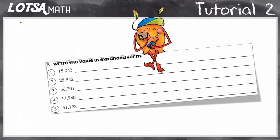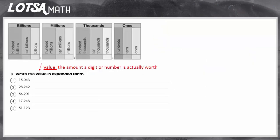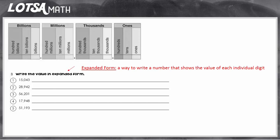For these questions, you have to write the value in expanded form. So let's look at what the directions actually mean. You're going to write the value, so value is an amount a digit or number is actually worth, but we're going to write it in expanded form. So expanded form is a way to write a number that shows the value of each individual digit.